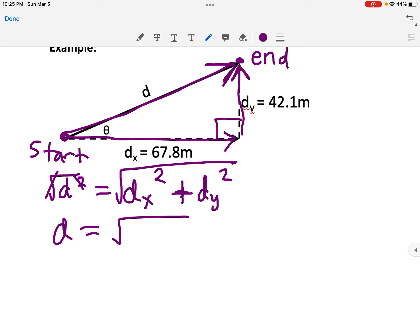Okay, so d equals, we can plug in our numbers here, dx is 67.8, and it's getting squared. dy is 42.1, and it's squared too. And all that will be square rooted at the end. So just type into your calculator, 67.8, square that, add it to 42.1, square that, and then square root the whole thing, and I get 79.8 meters.